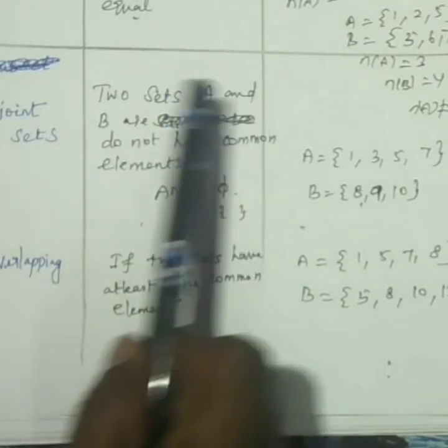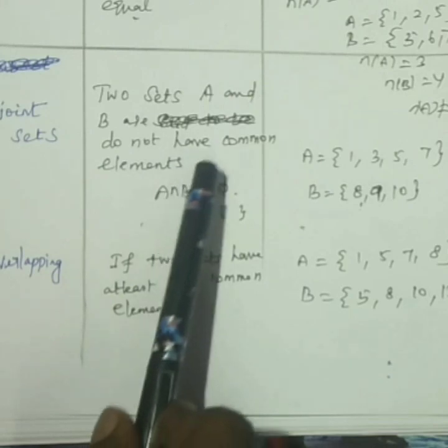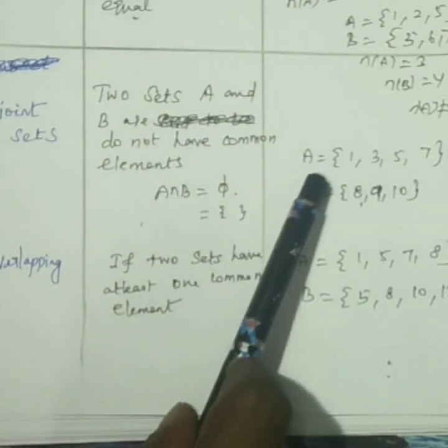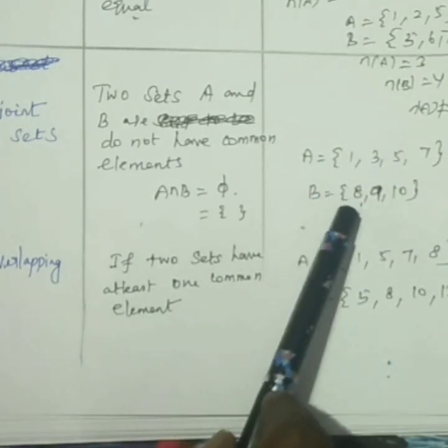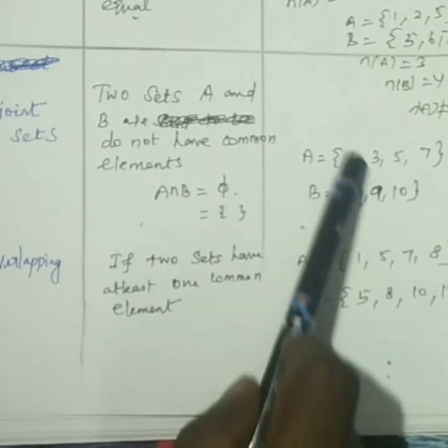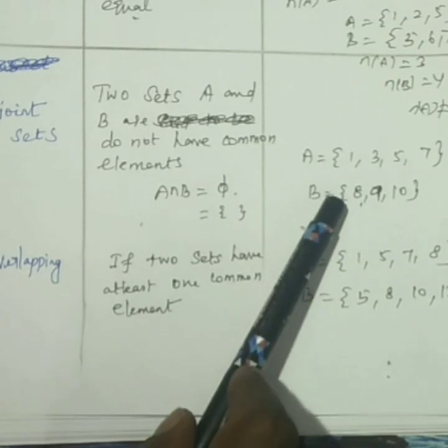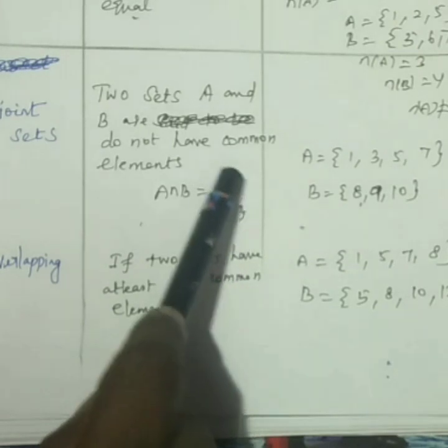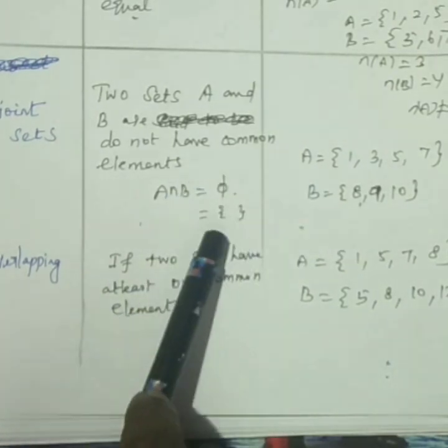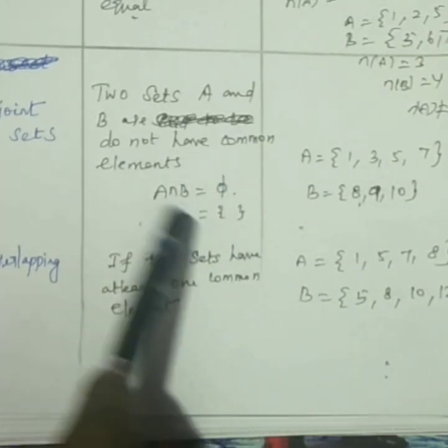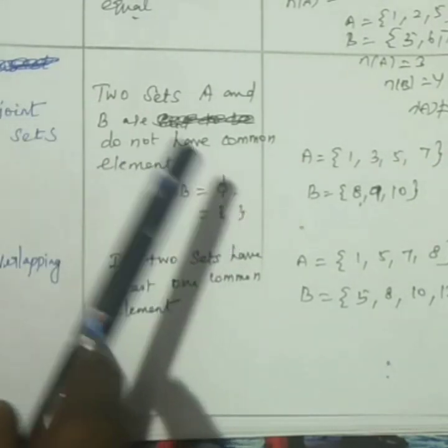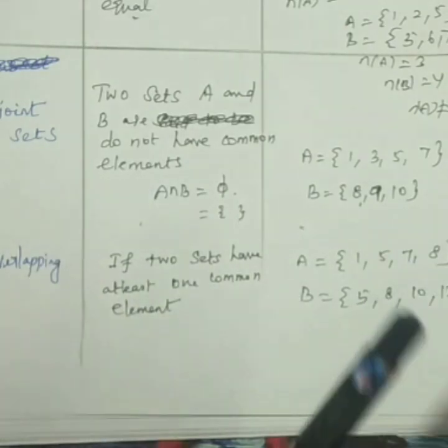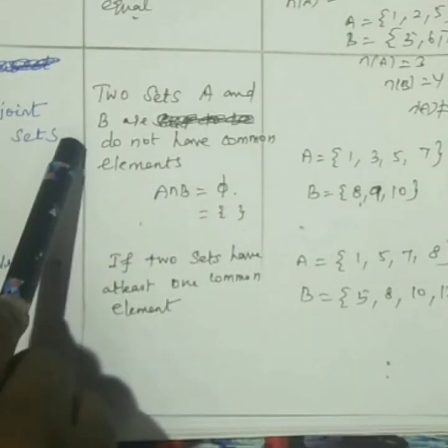Two sets A and B do not have common elements - no common elements. That is called a disjoint set.